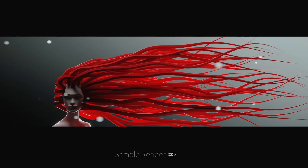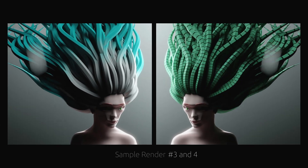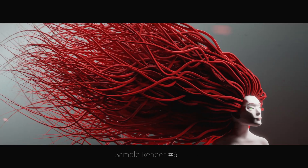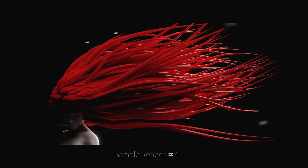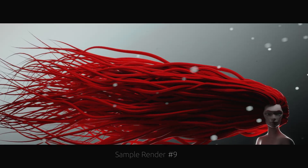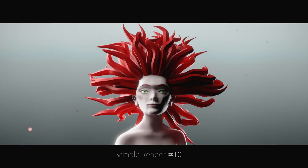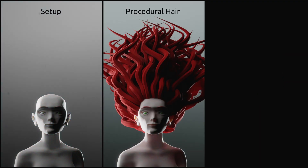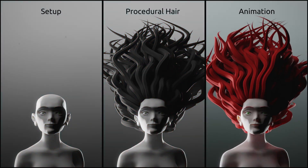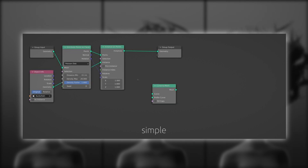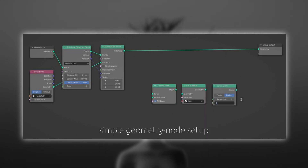Anne Shirley is one of my favorite characters from classic literature, so this video is dedicated to her unrestrained imagination and the inspiring sense of wonder. Starting with the sculpted head, we will procedurally generate the hair and then animate them — all of this with a simple geometry node setup.